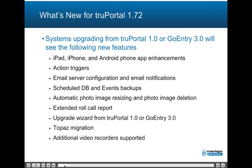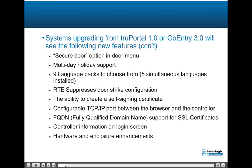New for TruePortal 1.72, for systems upgrading from TruePortal 1.0 or GoEntry 3.0: iPad, iPhone, and Android phone app enhancements; action triggers; email server configuration and email notifications; schedule DB and events backups; automatic photo image resizing and photo image deletion; extended roll call report; upgrade wizard from TruePortal 1.0 or GoEntry 3.0; Topaz migration; additional video recorders supported; secure door option in door menu; multi-day holiday support.